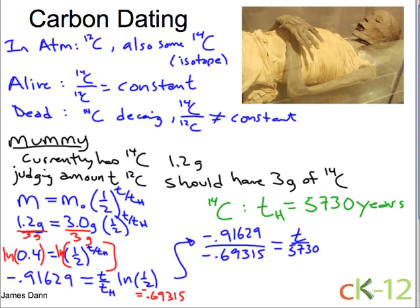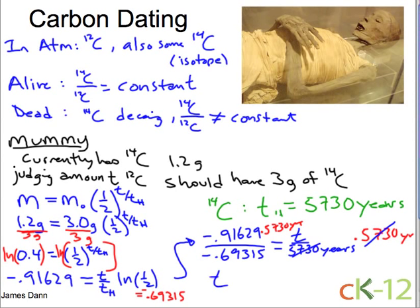The half-life time is 5,730 years. Multiplying both sides by 5,730 years, the half-life time cancels and I've isolated for T. The time you get is 8,270 years. So the mummy you dug up in your backyard is 8,270 years old.